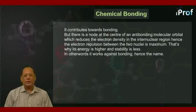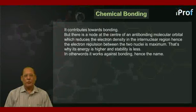But there is a node at the center of an anti-bonding molecular orbital, which reduces the electron density in the inter-nuclear region. Hence, repulsion between the two nuclei is maximum. That's why its energy is higher and stability is less. In other words, it works against bonding. Hence the name.